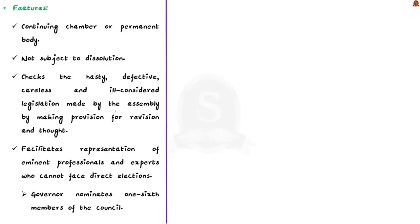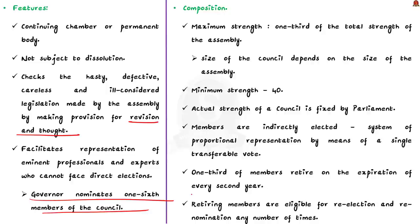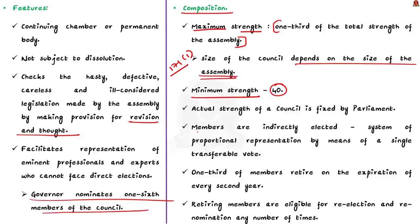This is done by making provisions for revision and deliberation. Also, it facilitates representation of eminent professionals and experts who cannot face direct elections. The governor nominates one-sixth of the members of the council to provide representation to such people. As per Article 171 Subsection 1, the maximum strength of the council is fixed at one-third of the total strength of the assembly, with a minimum strength fixed at 40. The size of the council depends on the size of the assembly of the concerned state. But remember, even though the constitution has fixed a maximum and a minimum limit, the actual strength of a council is fixed by the Parliament.